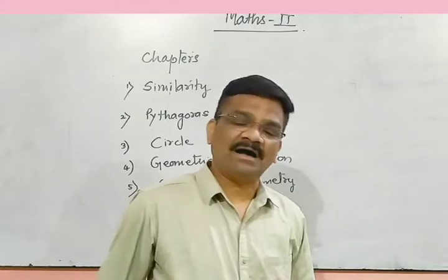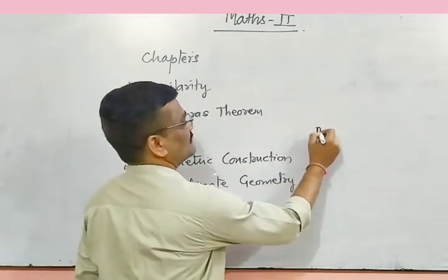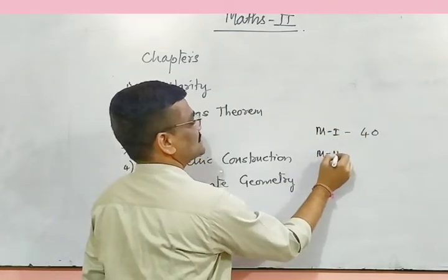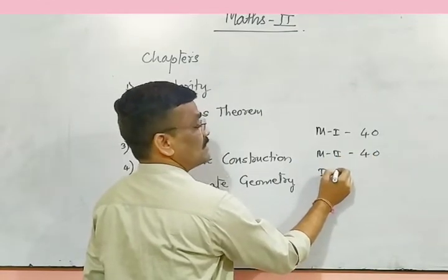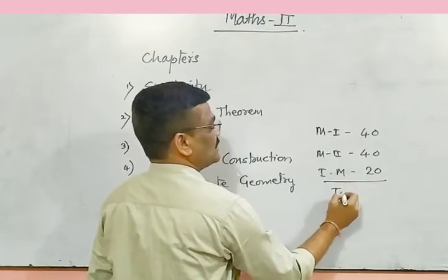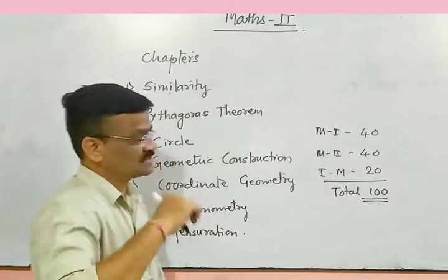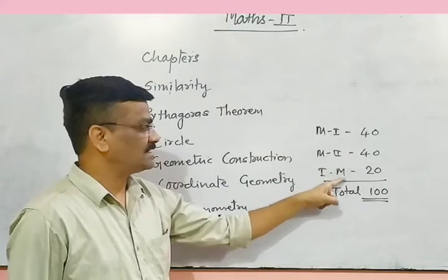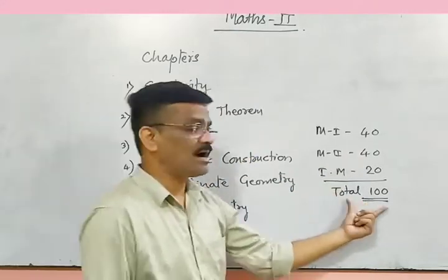In the board exam, you have a separate exam of Maths 2. Maths 1 contains 40 marks, Maths 2 contains 40 marks, and internal assessment marks will be 20. So in total you have 100 marks in mathematics — Maths 1 is 40, Maths 2 is 40, and internal marks are 20, all together making 100 marks.